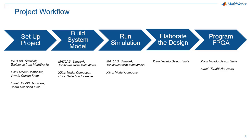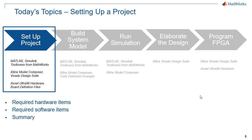Here's a simplified diagram that describes our project workflow. The blue arrows on top define major stages within the project, and the black text on the bottom lists all of the individual products, along with the companies that make those products, that you'll need to complete the project. We'll start with setup, move along to building up a system model, then to running simulation, then to elaborating the design — which means taking the finished model and targeting specific hardware architecture — and then finally moving to programming the FPGA. Today's focus will be setting up the project.